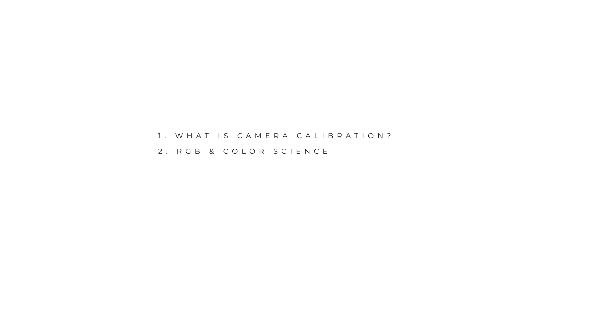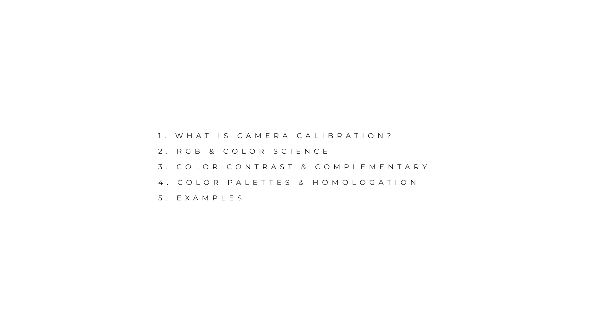Today we're checking out the most powerful tool that you have at your disposal for color grading in Lightroom, which is camera calibration. First we're going to jump into what camera calibration is — for that we have to define what RGB is and understand what color science is. Then we're going to jump into color contrast, and then homologation and creating palettes within camera calibration to help you define your style. Finally, we'll check out some examples on how I use camera calibration every single day.